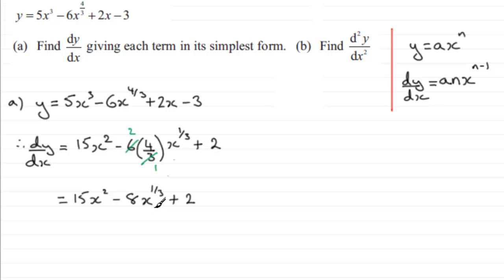Now for part B, we've got to find d2y by dx squared. That is essentially the result of differentiating dy by dx with respect to x.